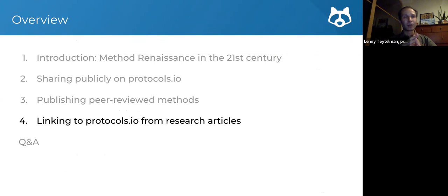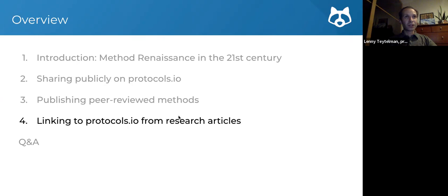Moving more broadly outside of PLOS ONE, if you're using protocols.io and have your protocols in there, it makes it really easy to share your protocols as you're publishing your research papers. Even if you're not publishing a dedicated protocol paper, when you do publish your research results, using protocols.io makes it easier to write your methods sections. There are many journals that now encourage use of protocols.io in author guidelines when you submit a paper, and this helps to address a common problem we often see in published papers where the methods sections are vague.